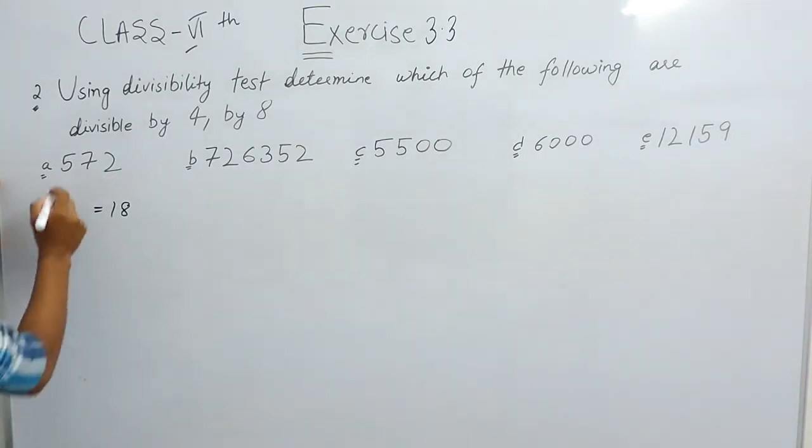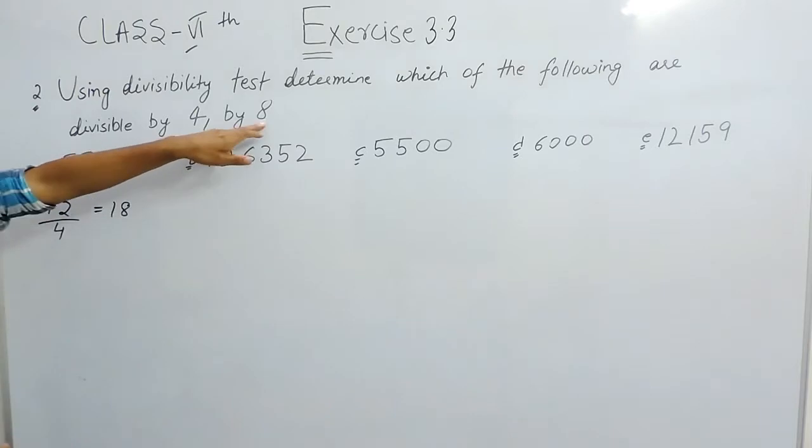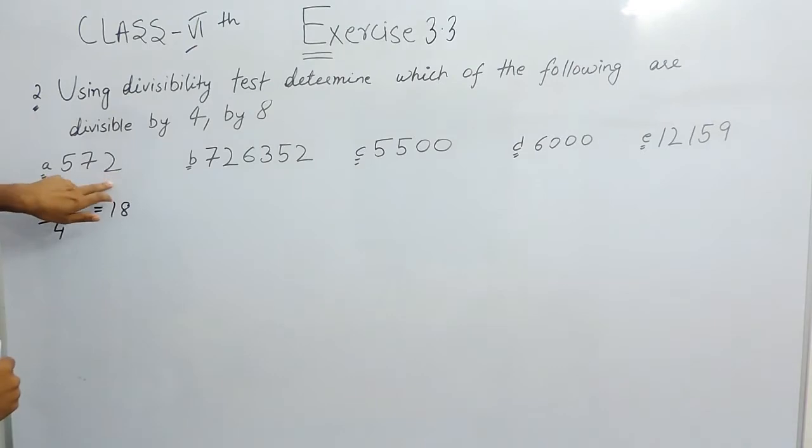Since the last two digits are divisible, this whole number will be divisible by 4. And for divisible by 8, the last three digits 572 should be completely divisible by 8. 8 times 7 is 56, remainder is 1.